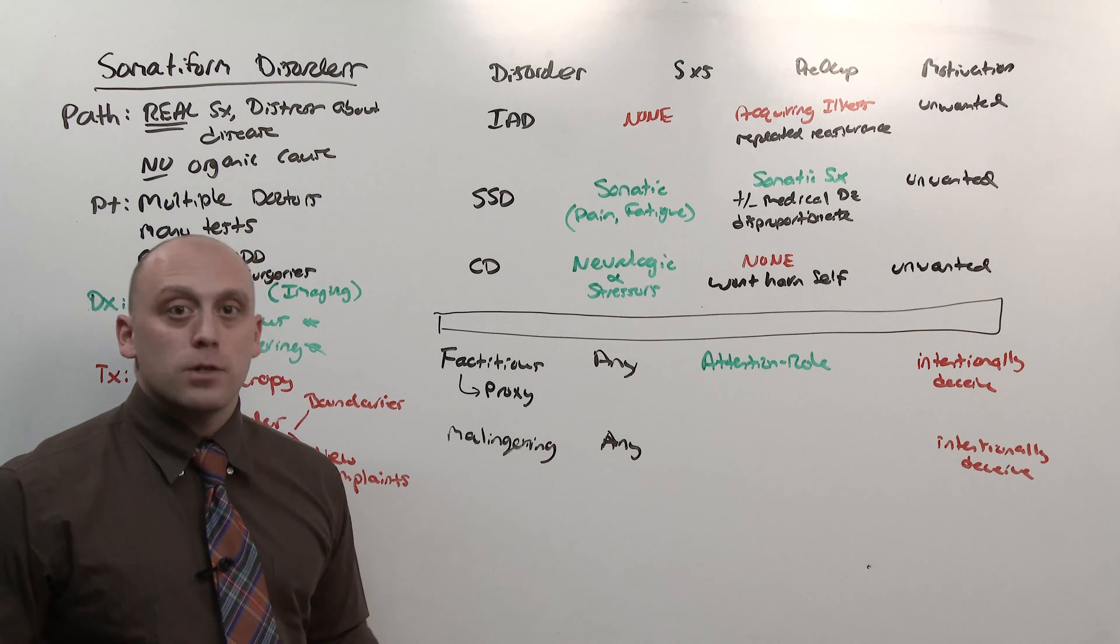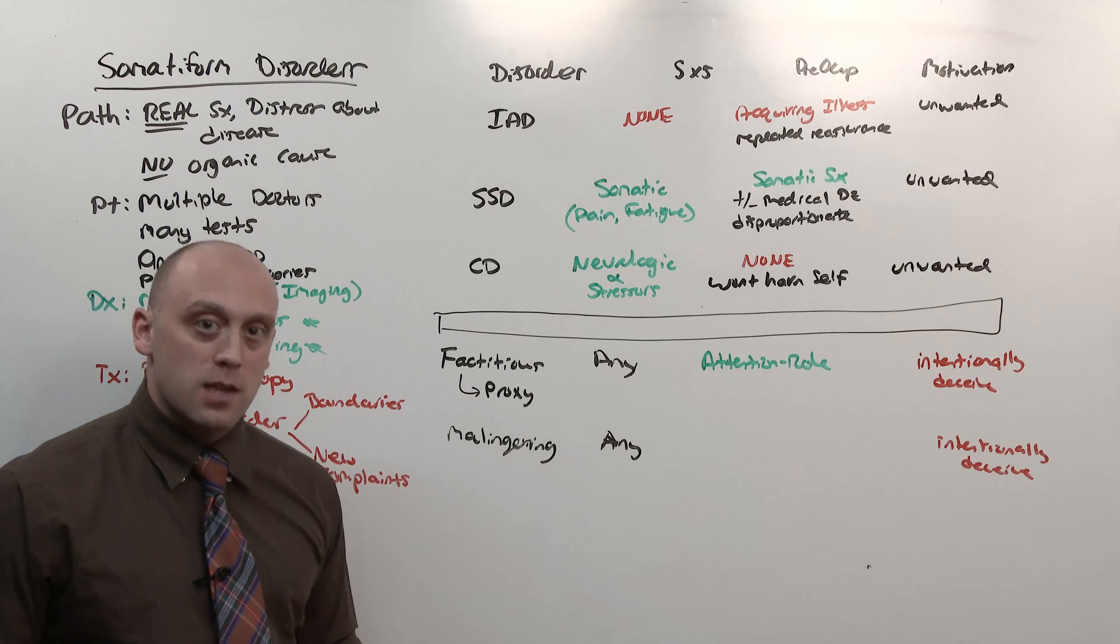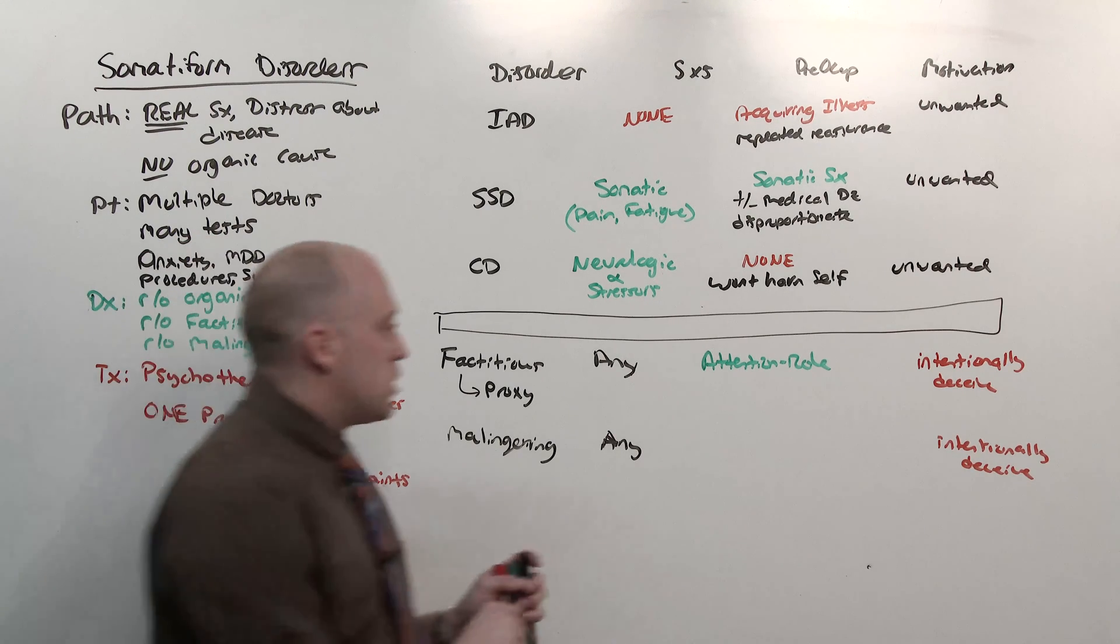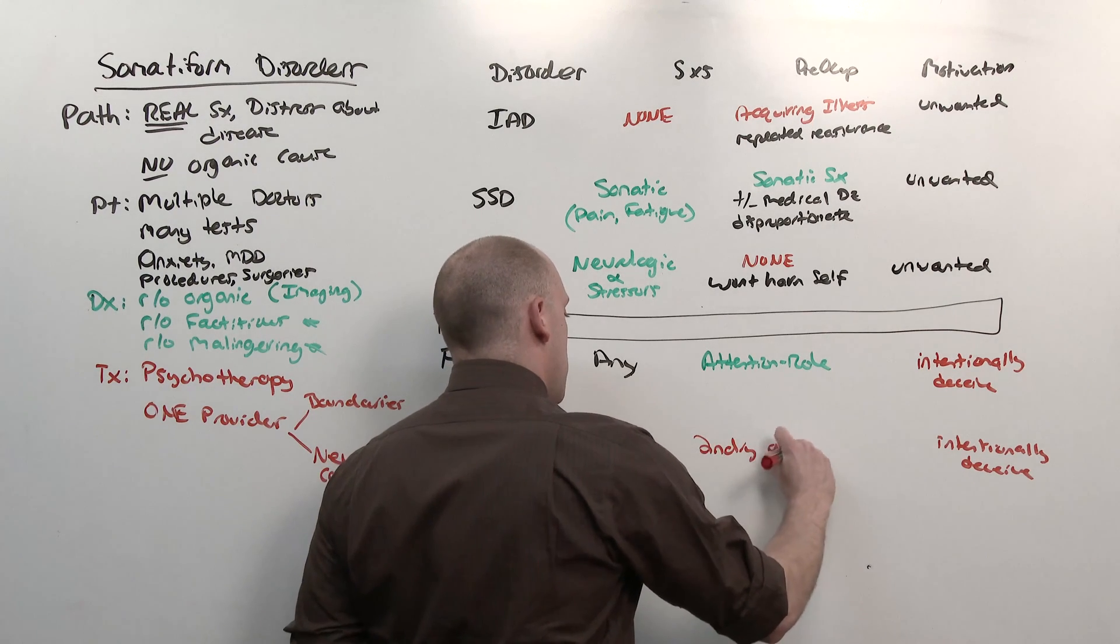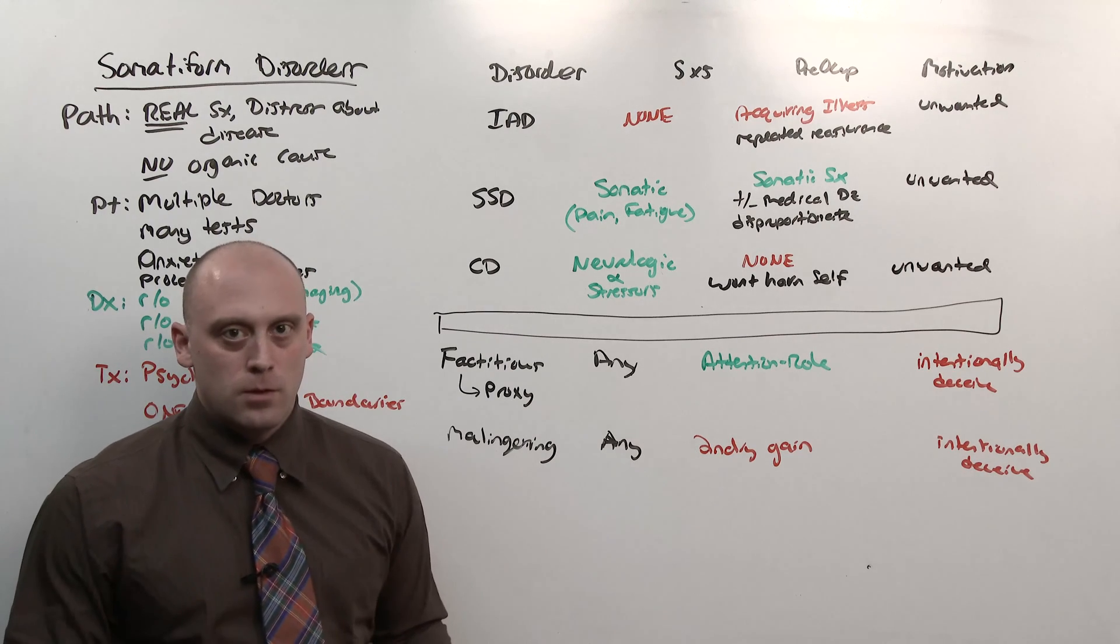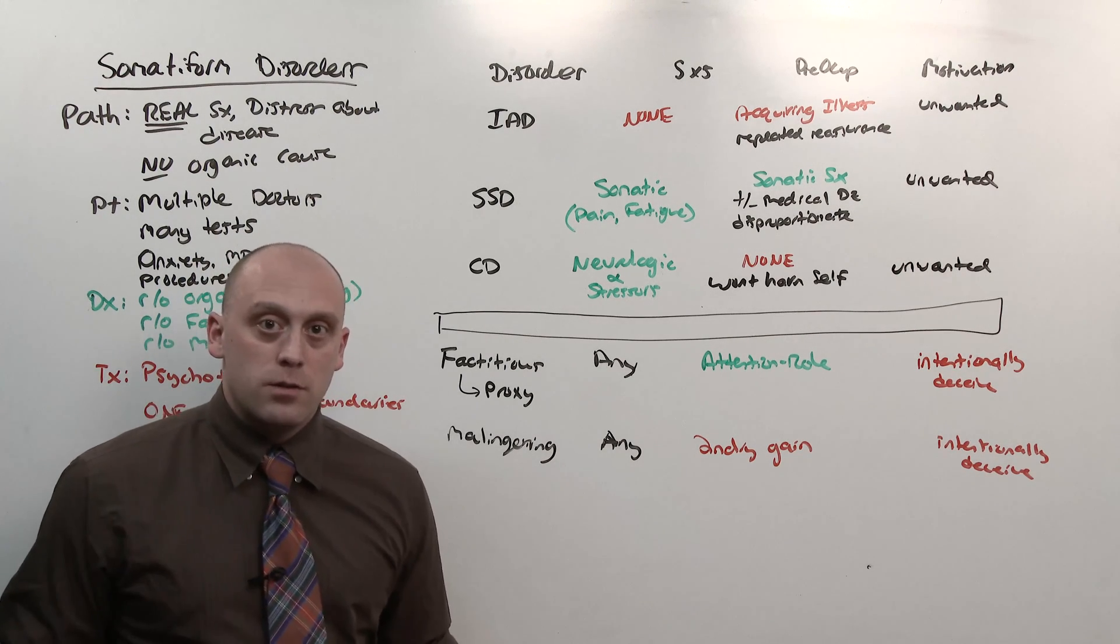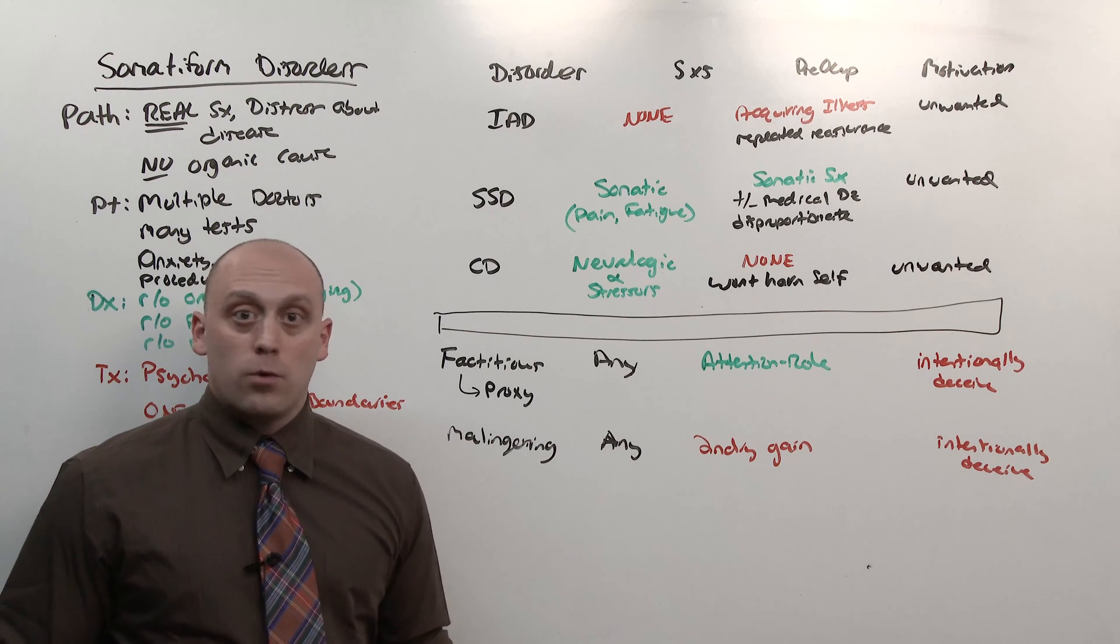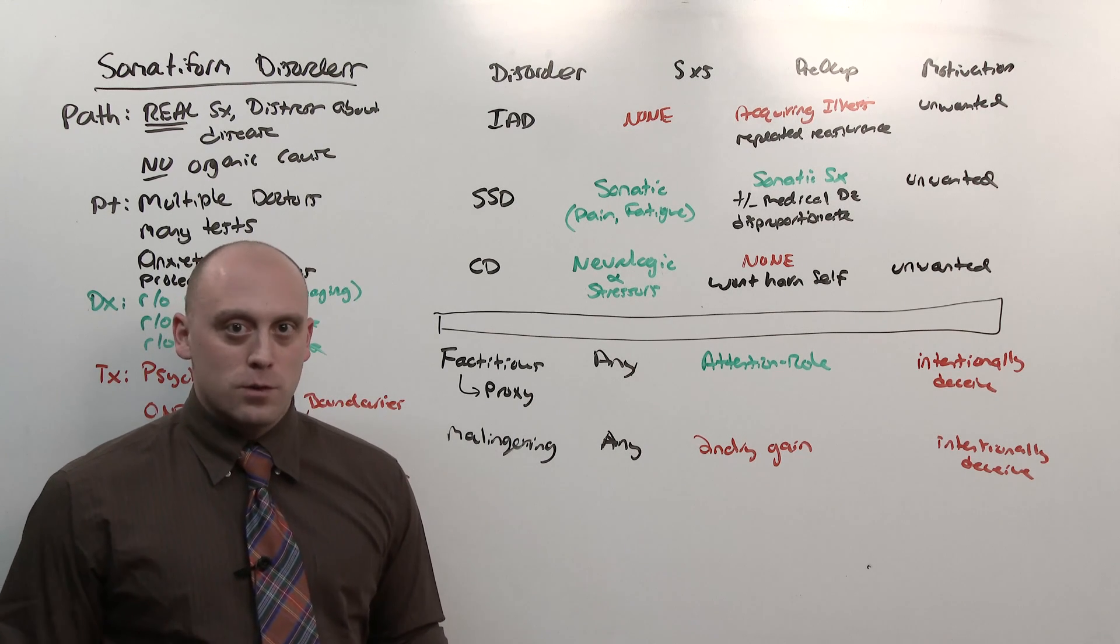An example of that would be the person who injects themselves with fecal matter in order to maintain septicemia so they stay in the hospital. On the other hand, the person who is a malingerer is doing this for secondary gain. Money, insurance, freedom. This is the construction worker who feigns a back injury and then goes to work on his own roof while he's collecting a social security check. Or Walter White, when he went on his dissociative fugue.